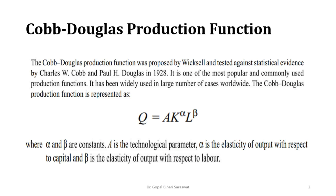Cobb-Douglas production function was first proposed by Wixel and tested statistically by Charles W. Cobb and Paul H. Douglas in 1928. It is one of the most popular and commonly used production functions and has been widely used in a large number of cases worldwide. The Cobb-Douglas production function is represented as Q = A · K^α · L^β.